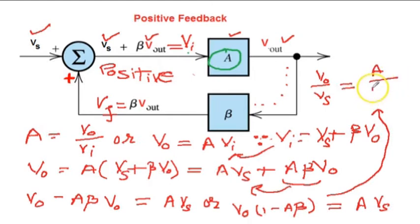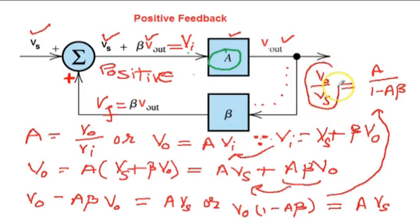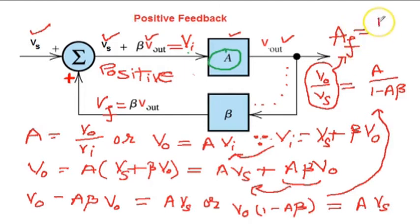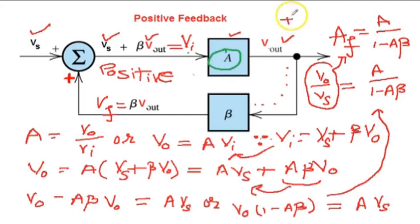V0 upon VS is the gain of the whole system, so it is called the feedback gain of the whole system. For positive feedback, it is A upon (1 minus A beta). This is very important — for positive feedback, remember the feedback gain is A upon (1 minus A beta).